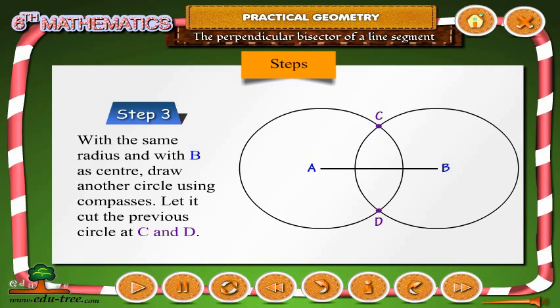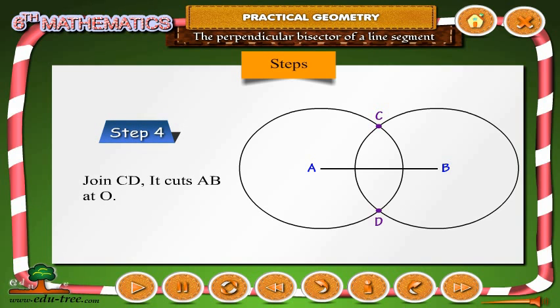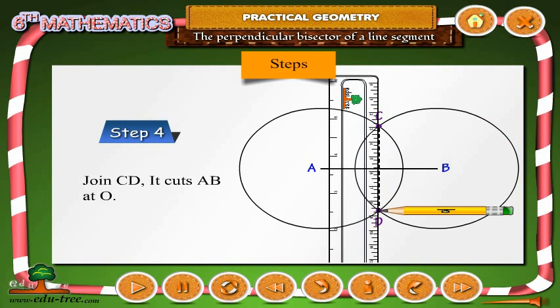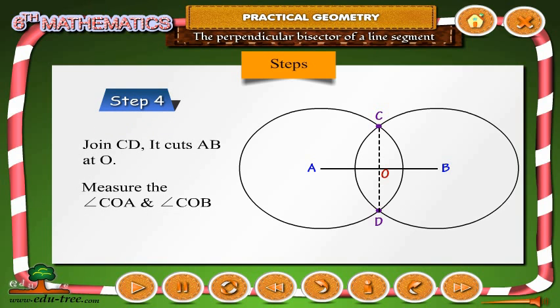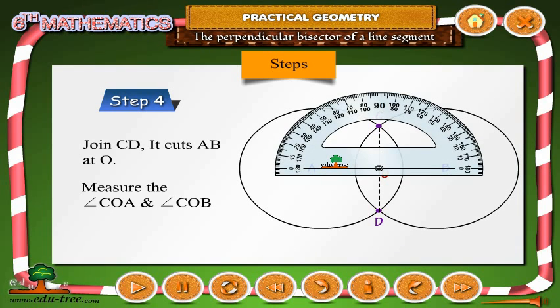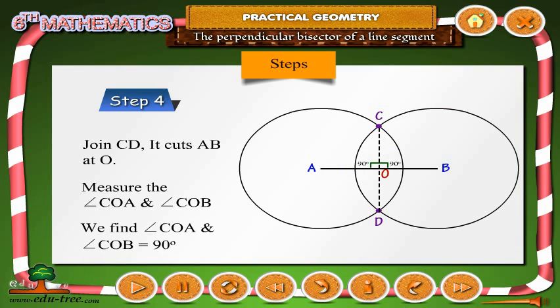Step 4: Join CD. It cuts AB at O. Measure angle COA and angle COB. We find angle COA and angle COB equals 90 degrees.